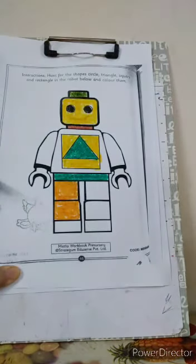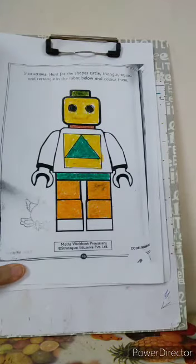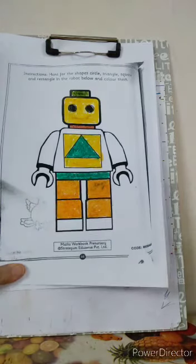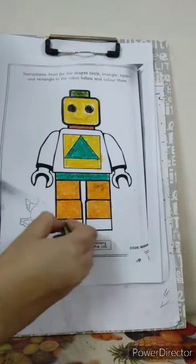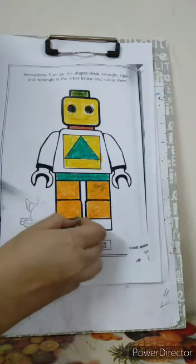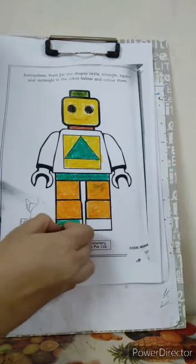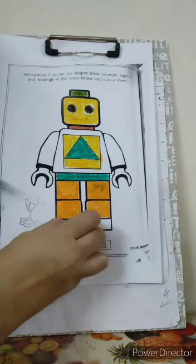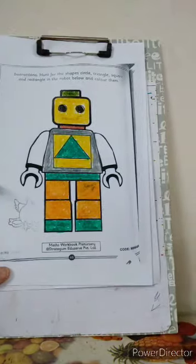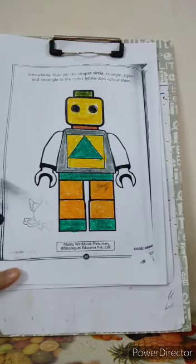Nice children. Now children, we have colored the squares. Now let us color the rectangle. Let us take a green color for rectangle. Let us color the rectangle shape. Yes, children.